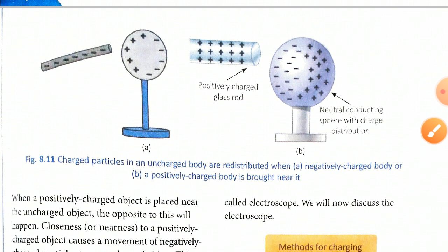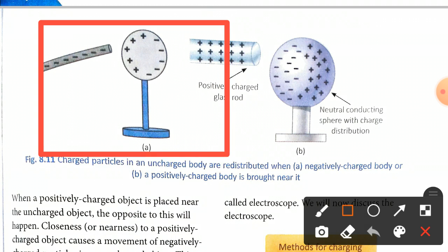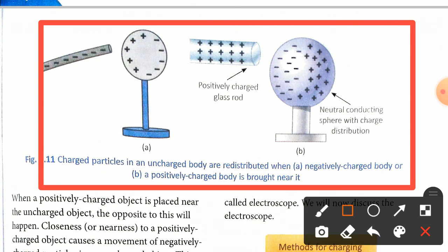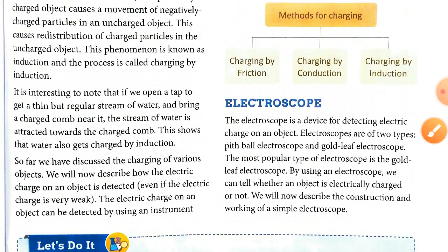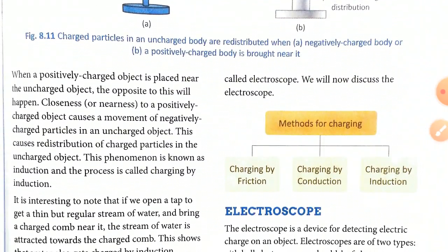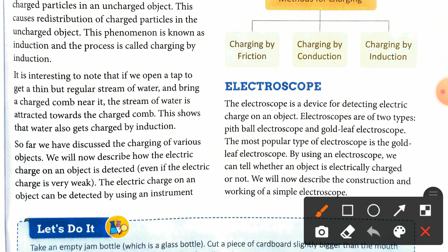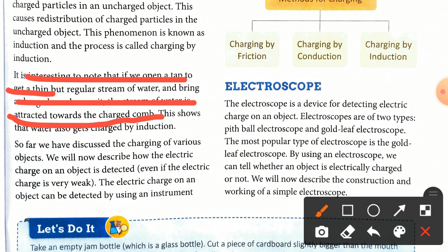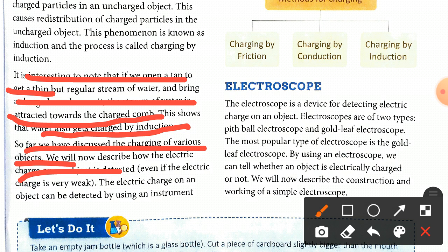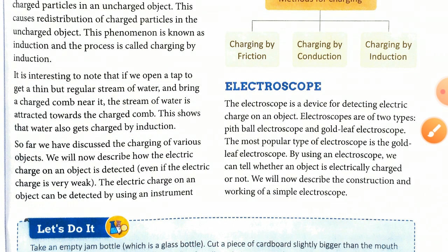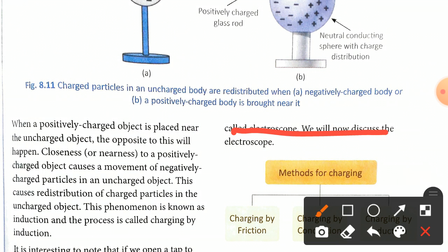When a positively charged object is placed near an uncharged object, the opposite happens — negatively charged particles in the uncharged object move toward the positive object. It is interesting to note that if we open a tap to get a thin but regular stream of water and bring a charged comb near it, the stream of water is attracted towards the comb. This shows that water also gets charged by induction. So far we have discussed the charging of various objects. We will now describe how the electric charge of an object is detected.